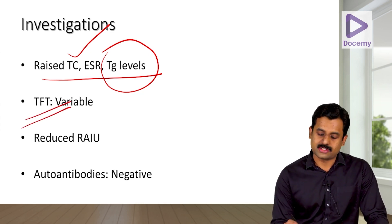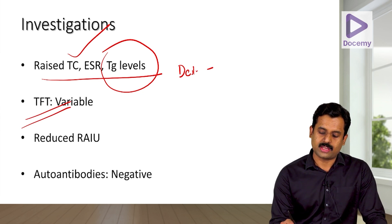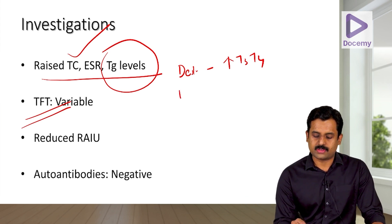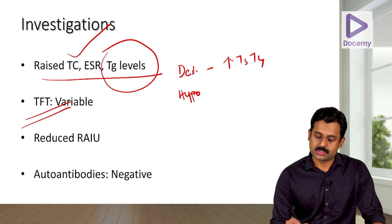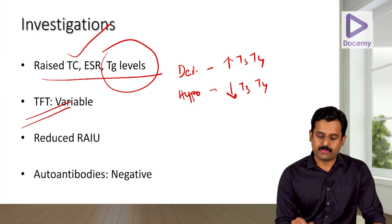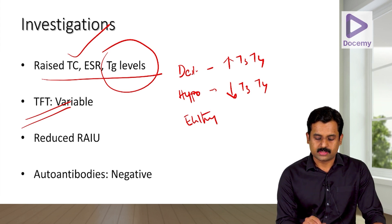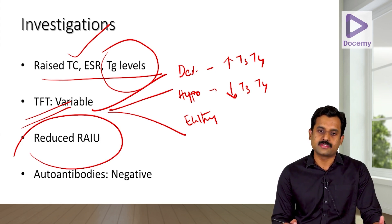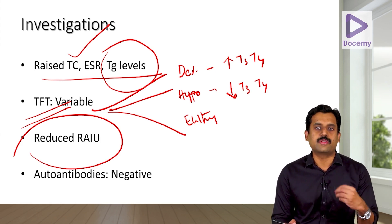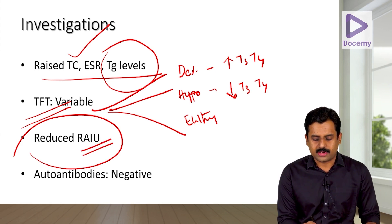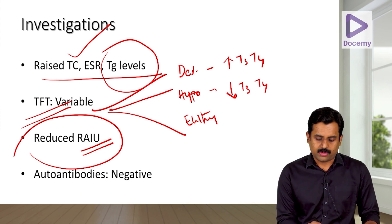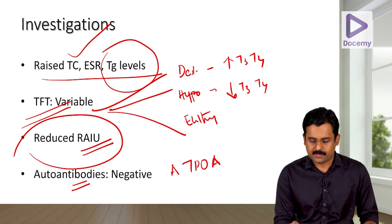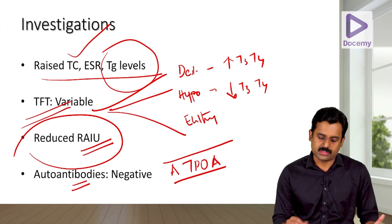Thyroid function tests show increased T3 and T4 in the destructive phase, mimicking hyperthyroidism, followed by depletion mimicking hypothyroidism, then recovery to euthyroid status. Radioactive iodine uptake is reduced because disrupted thyroid follicles can no longer take up iodine. Anti-thyroid peroxidase antibodies will be negative, as this is a viral — not autoimmune — inflammation.